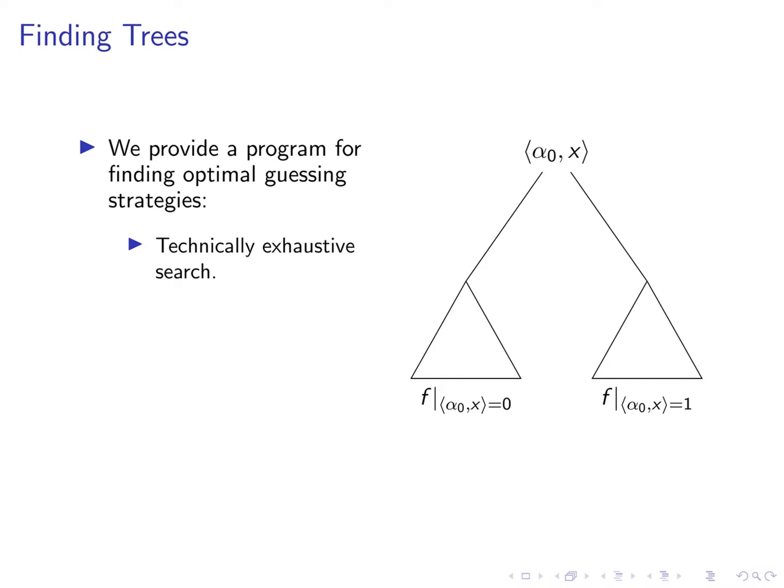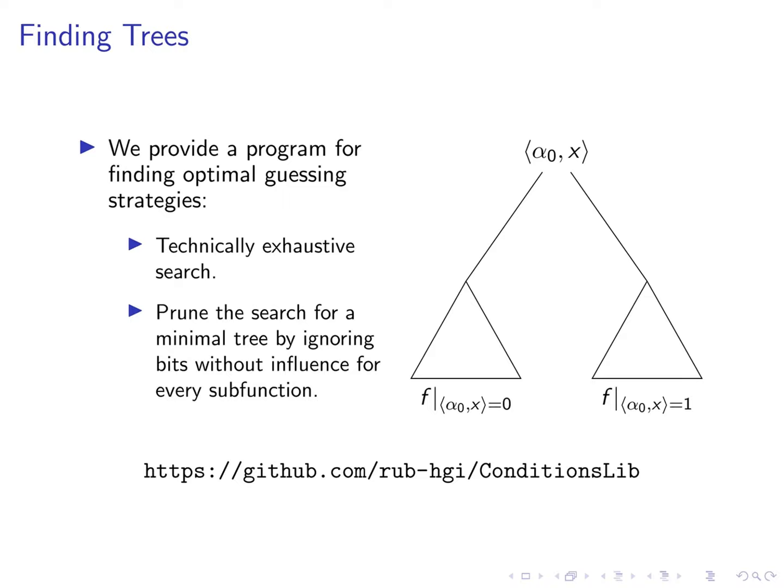Our most important optimization was to filter out those linear combinations when considering each sub function whose value has no influence. This provides an algorithm which can analyze functions up to input dimension 6 in a reasonable amount of time and also though noticeably slower functions up to dimension 7. Together with the paper we have made our program available under the url shown here.